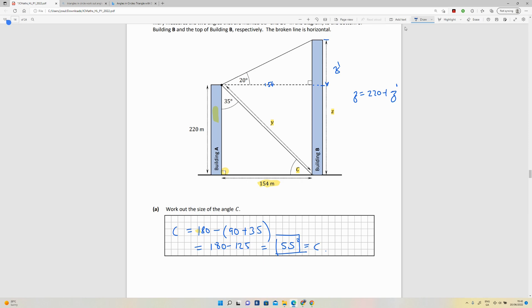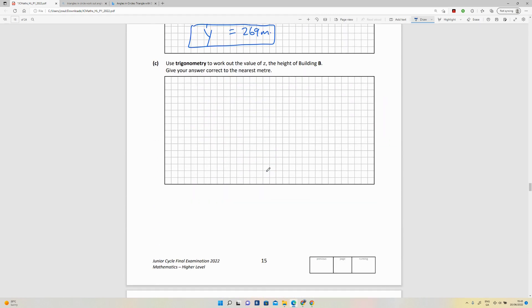We've got a right angle here again, and we know about 20 degrees. So z1 is the opposite, and we know that this dotted line here is 154 because it's the same as the distance between A and B at the bottom. So that's the adjacent.